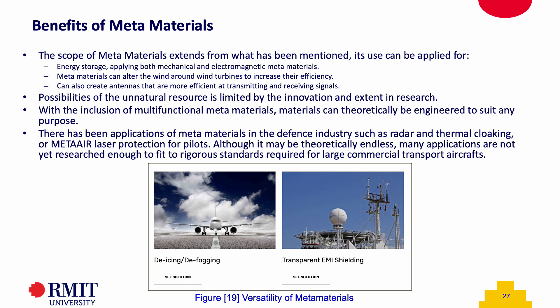Metamaterials display characteristics that go beyond what standard materials typically demonstrate in everyday situations. Some major key benefits of using metamaterials are the possibilities they can provide. Being an artificially developed resource, they can be created to suit the needs of their users. At the moment there are many different applications for metamaterials being researched, including energy storage, increasing turbine efficiency, and more efficient transmitting and signal receiving antennas. There have also been applications in the defense industry such as radar and thermal cloaking or metamaterial laser protection for pilots. Even though the current capabilities of metamaterials are theoretically wide-ranging, many applications still need to undergo further research before implementation. With safety measures and policies in place, metamaterials need to be able to suit rigorous standards whilst maintaining their benefits to fit into the industry, and our technology is not yet able to do that.